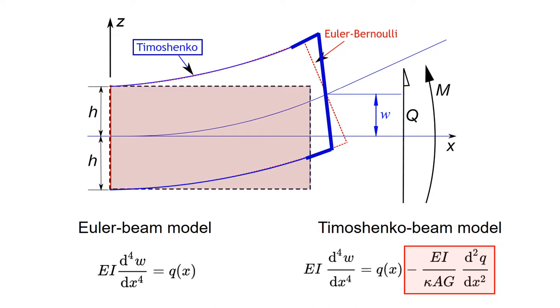So again, simply put, by accounting for shear deformation, the Timoshenko beam model tends to flex more, which drops the natural frequency of the beam or rotor that you are modeling.